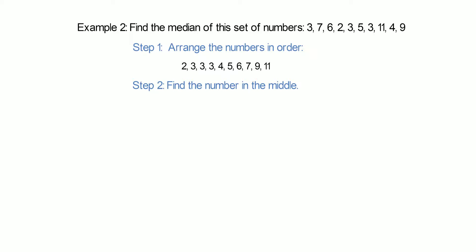Step 2: Find the number in the middle. In this example, there are two numbers in the middle, 4 and 5. To work out what is in the middle of these two numbers, we add them and then divide by 2. So 4 add 5 is 9. 9 divided by 2 is 4.5. Therefore, the median is 4.5.